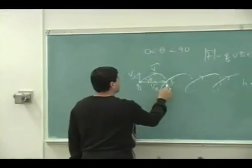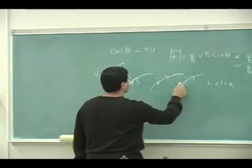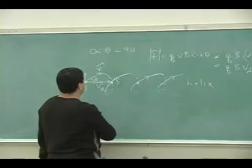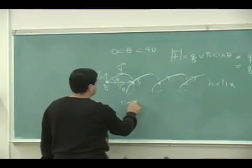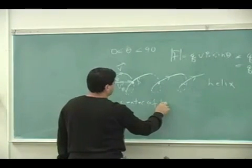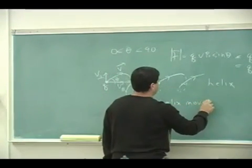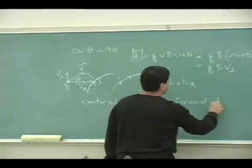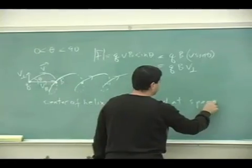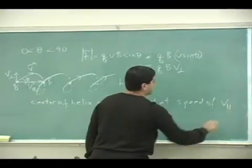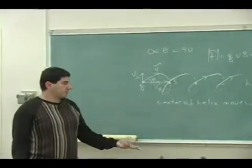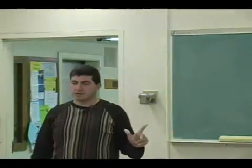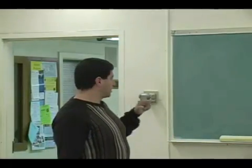So the center of the circle of the helix moves forward at a rate of, we could kind of say it like this, the center of helix moves forward at speed of V parallel, which is what I said at the beginning. The V parallel is not affected by the B. It just keeps going forward.